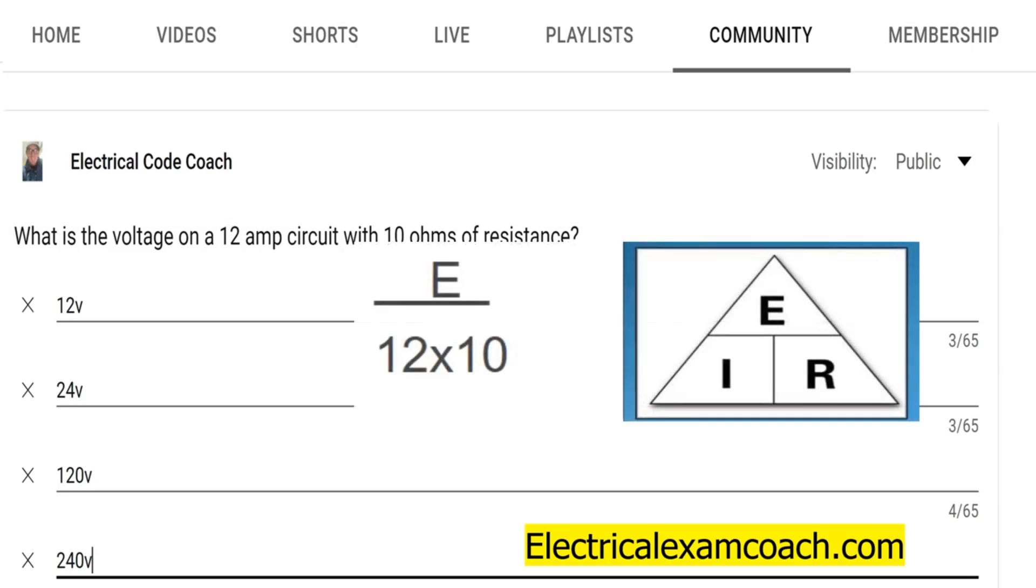So we're going back to the basics here with Ohm's law. We're going to plug in what we know. We know the amperage and the ohms, so we take those two and put them in our Ohm's law formula. We take 12 multiplied by 10, and we find out that the answer is 120 volts.